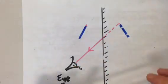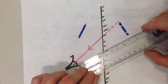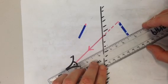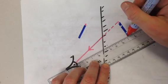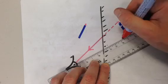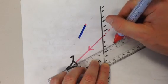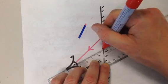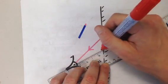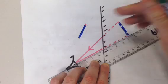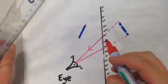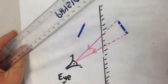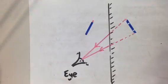We then do the same from the bottom of the candle. So a dotted line whilst we're working inside the mirror, as it were, to show it's a virtual ray of light. And then once we're on the front of the mirror, draw a proper line. Again, we'll put our arrow on to show the direction that the ray of light is traveling in.